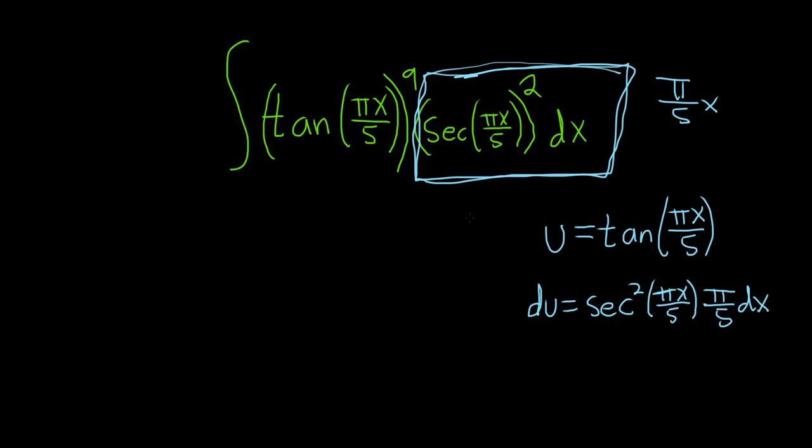Now we don't have a pi over 5 constant in our integral. So we'll divide both sides by pi over 5 like this. When you do that, you're basically multiplying by the reciprocal. So 5 over pi du is equal to secant squared of pi x all over 5, and then we have our dx. And now we're ready to make the substitution.